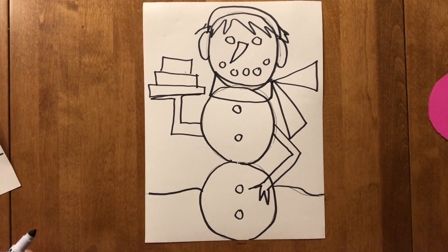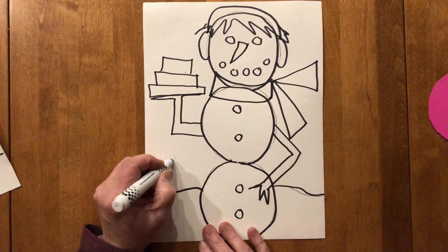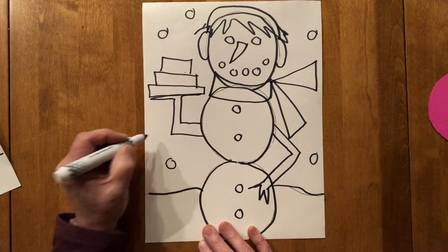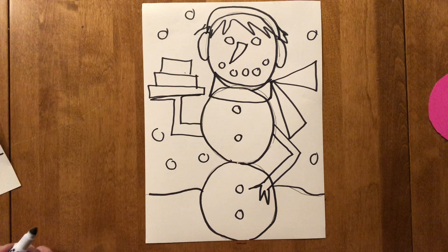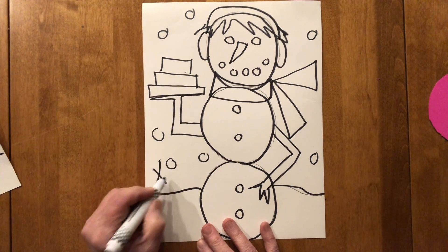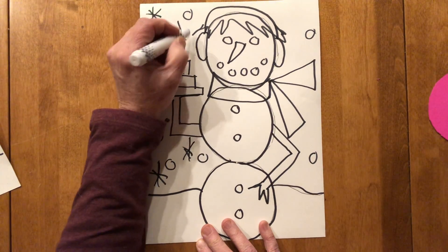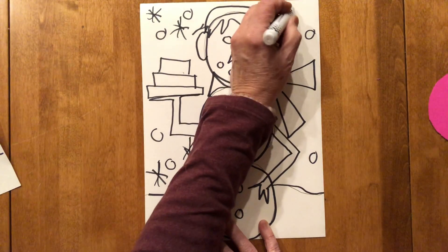Then I'm going to put some snowflakes around. So let's do five or more circle snowflakes around, okay, in the sky and then I'm going to do five or more lined snowflakes all around my snow person.